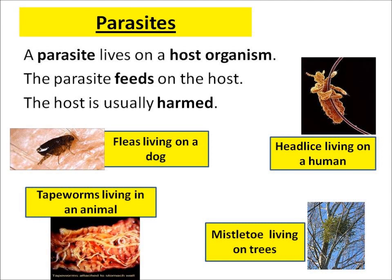After food webs we can look at another type of interdependent relationship, and this is the relationship between parasite and host organism. A parasite is an animal or a plant which feeds on the host organism and usually harms the host organism.